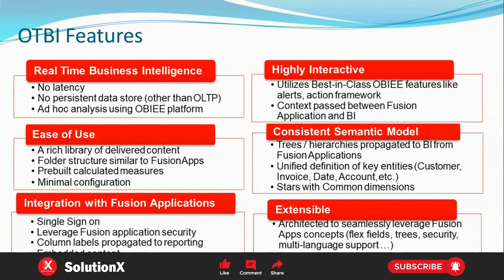Pre-built calculated measures mean that, for example, if you want to calculate a person's salary or a total invoice amount, instead of writing aggregate functions as in BIP reports, Oracle provides pre-built calculated measures for amount-related columns. You just drag and drop those amount-related columns into your selection criteria to easily get calculated amount data. Only minimal configuration is needed to work with OTBI reports and integrate with Fusion Applications.